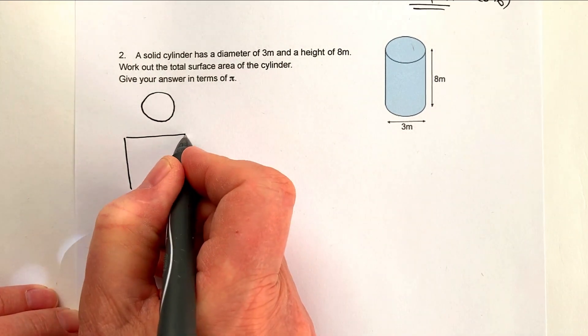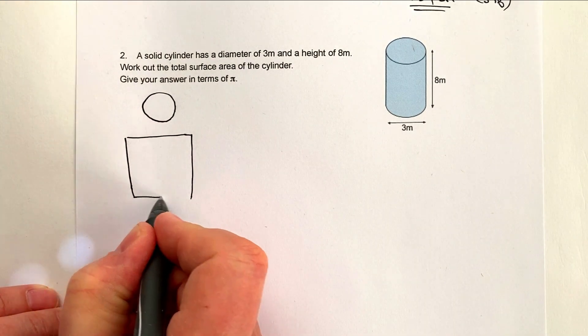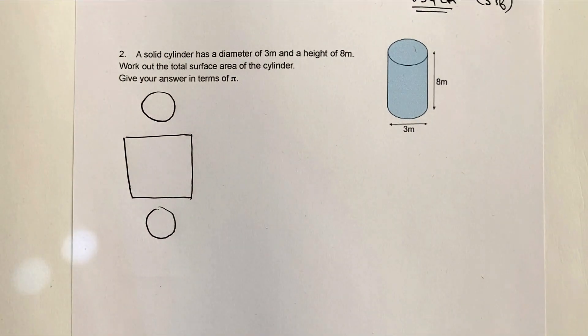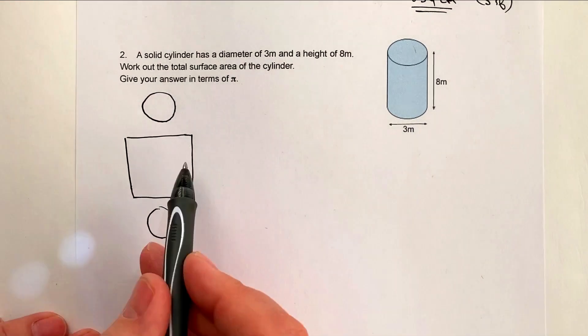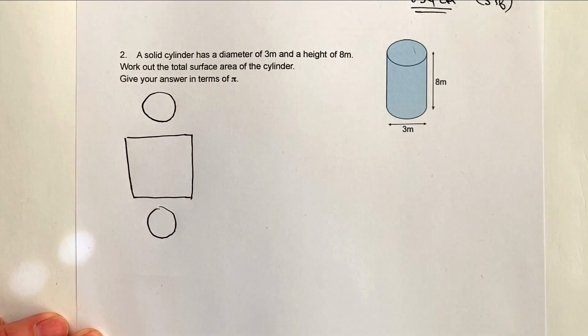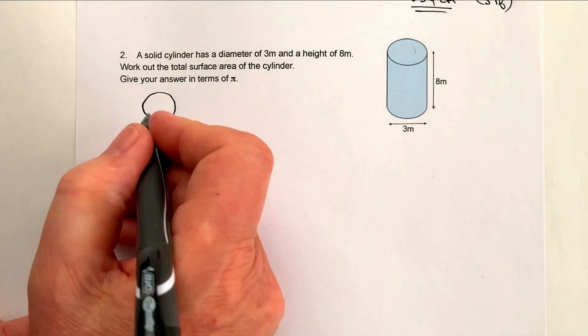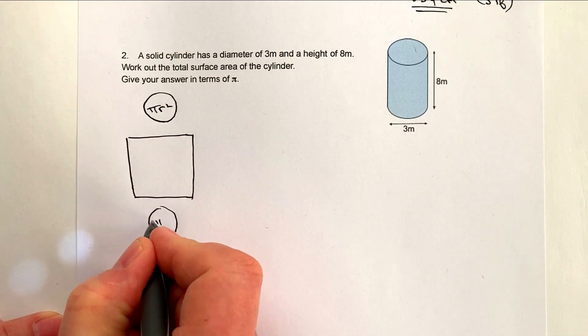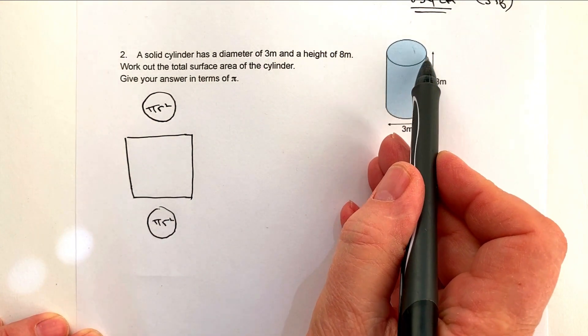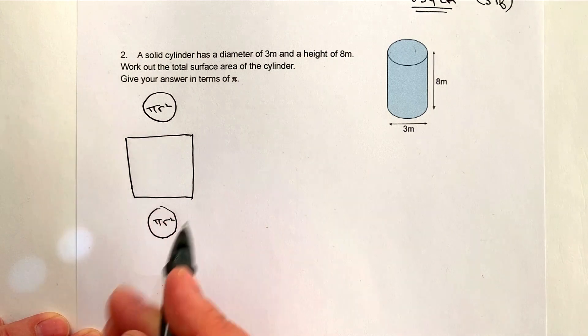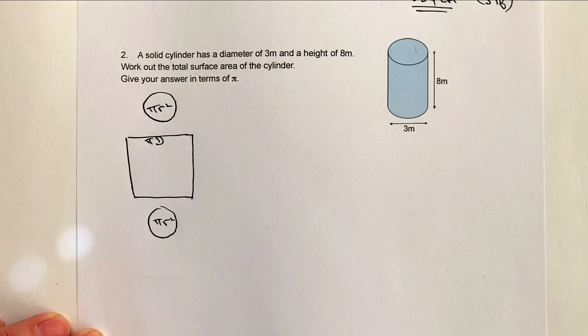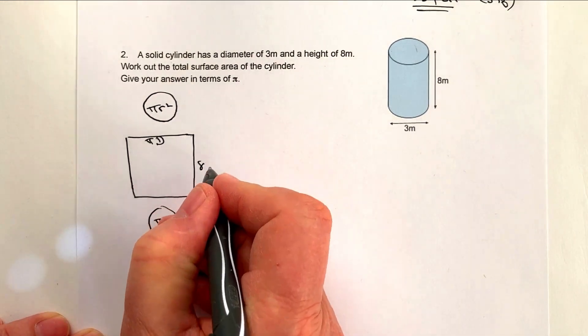So back in primary school, you would have talked about the net of a 3D shape. And if I lay everything out flat, then I've got this rectangle in the middle, which is going to be this curtain around here. I've got my two circles, which is one at the top and a one at the bottom. And again, as before, I've got πr², πr². And if you remember, the circumference of a circle is going to be this length along here, which I'm going to use πd for. And the height of this particular rectangle is going to be 8.